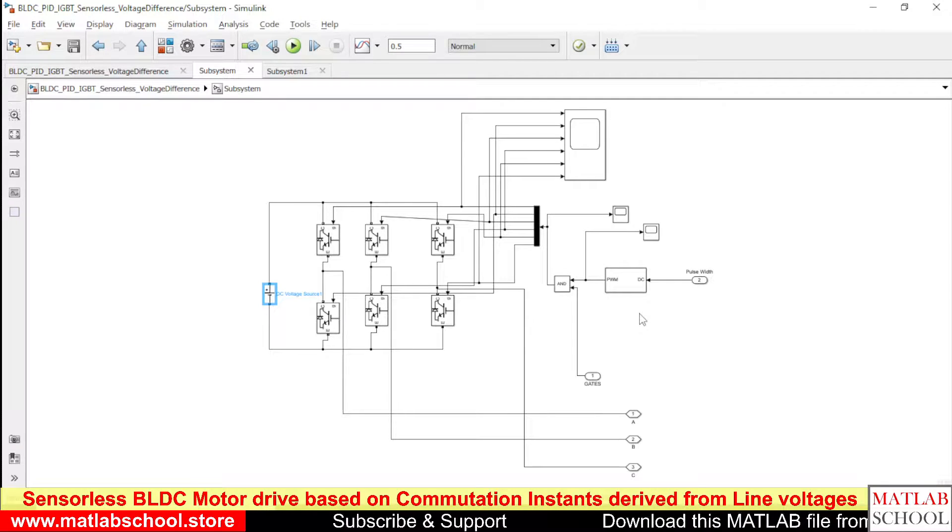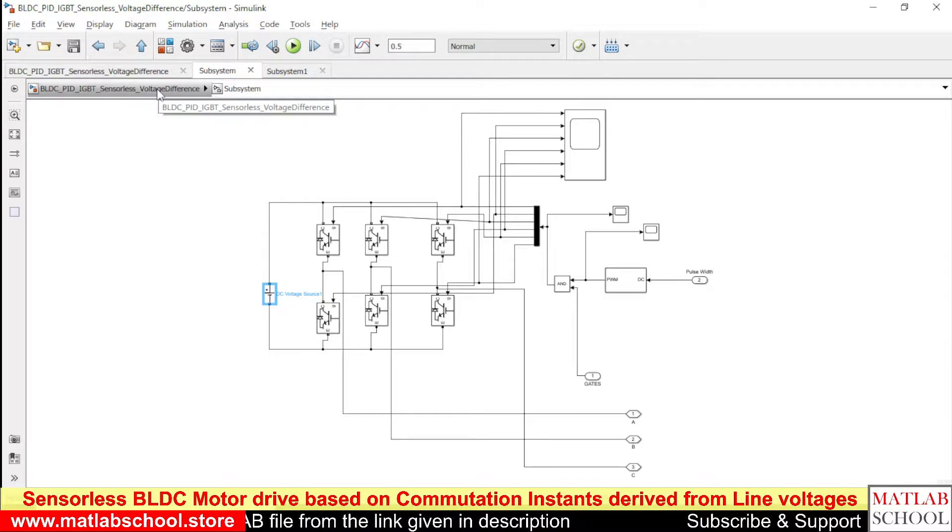So based on the values of the PID controller, the pulse width of the signal will get varied correspondingly. So this will be helpful in controlling the speed of the machine.